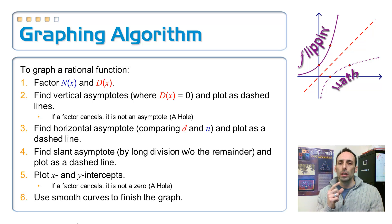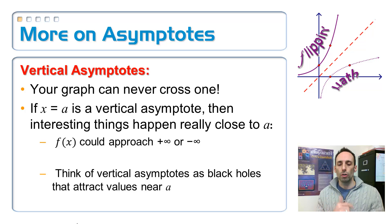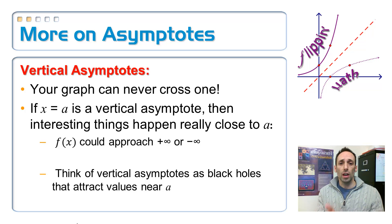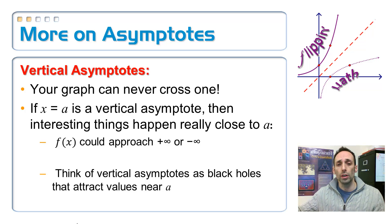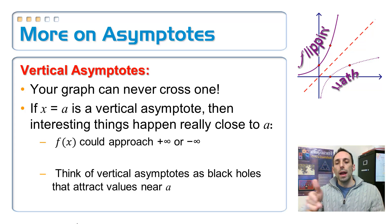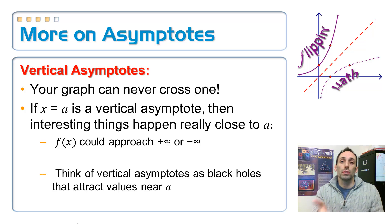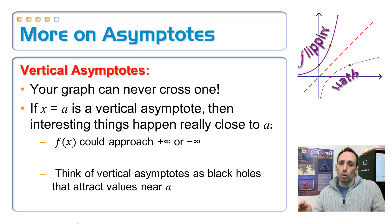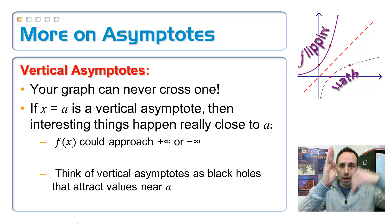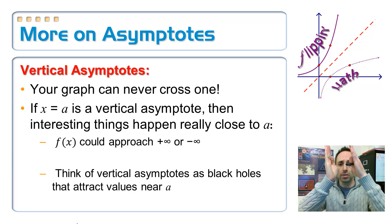Let's talk in more detail about what the graph is supposed to look like around those asymptotes. For vertical asymptotes: your graph can never cross a vertical asymptote. Why not? Because if it touched the vertical asymptote, that x value would work in the equation, making the denominator equal to zero. So if you have a vertical asymptote at x equals a, your graph is either going to approach positive or negative infinity — sometimes in opposite directions, sometimes in both the same direction.